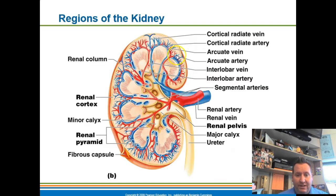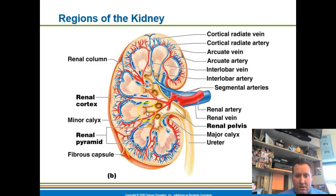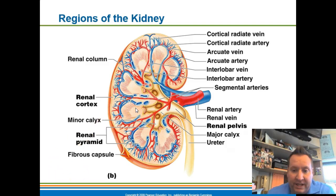Looking at the kidney layers: the very outside is called the renal capsule, then the renal cortex, the middle layer is the renal medulla, and the inner layer is the renal pelvis. The renal pelvis is continuous with the ureter running down from it. The renal hilum is that indentation where structures enter and exit.